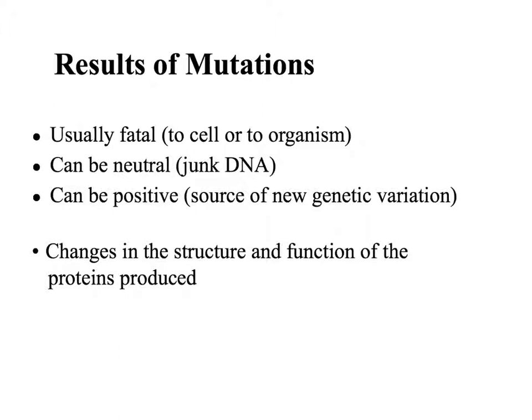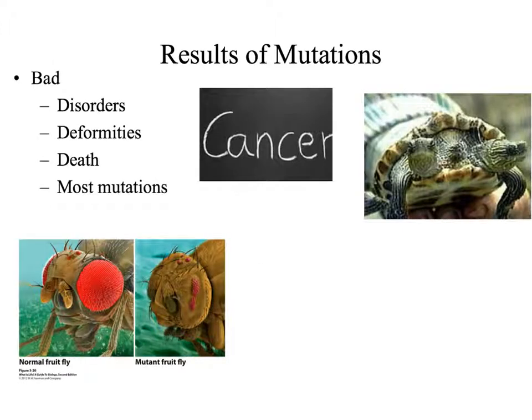If a mutation occurs in a gene, we see that there are changes in the structure and the function of the proteins that are produced. Some of the worst results of mutation are things like cancer, death, and deformities. They can result in physical deformities and mutations as well.